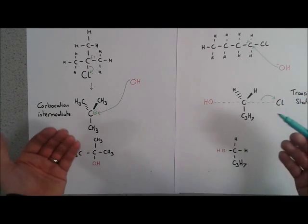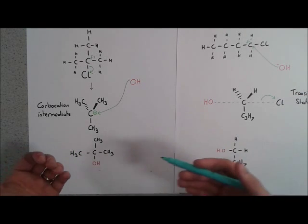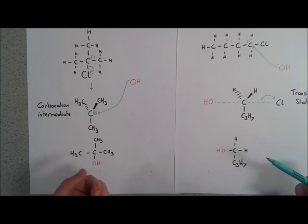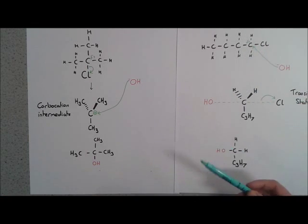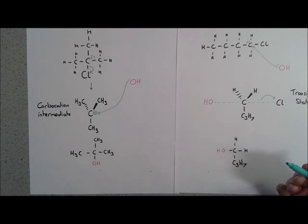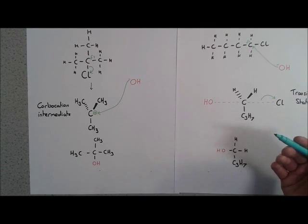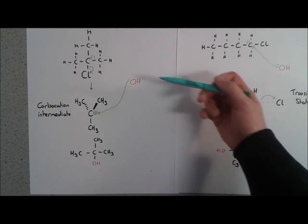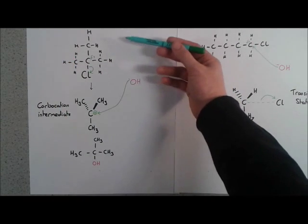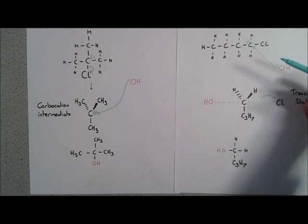Secondary alcohols could fit into either way depending on whether the groups on the carbon that is attacked are able to stabilize a carbocation or not. This molecule is much more sterically hindered than this one. SN1: sterically hindered, OH cannot attack. SN2 is sterically unhindered, the OH is able to attack.